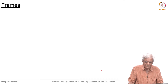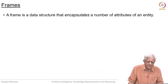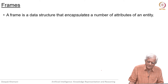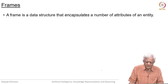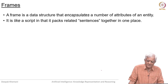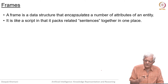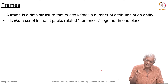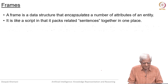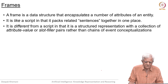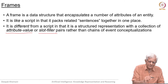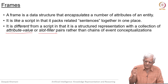Let us now look at frames. A frame is a data structure that encapsulates a number of attributes of an entity. It is like a script in that it packs related sentences together in one place, except that the representation is closer to the triple representation we talked about and less like a complex logical sentence. It differs from a script in that its structure is a collection of attribute-value or slot-filler pairs rather than chains of conceptualizations.